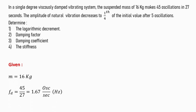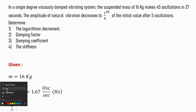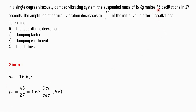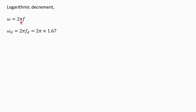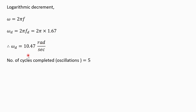Mass m is equal to 16 kg. We can easily calculate the damped frequency from the data. There are 45 oscillations in 27 seconds, so it is 45 divided by 27, that is 1.67 oscillations per second or hertz. We know that omega equals 2πf, so omega_d equals 2π multiplied by the damped frequency 1.67, giving omega_d equal to 10.47 radians per second.